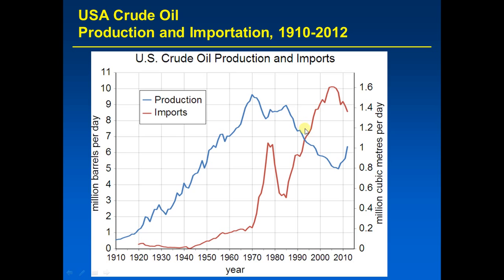As U.S. oil production started to decline in the 80s, imports went up. There's a dramatic rise in U.S. oil imports starting in the 70s. In 1970, the U.S. was only importing about 1.5 million barrels per day. By 1975–1976, that value had risen to about 6.5 million barrels per day. This was partly because of the sudden decline in U.S. oil production over several years — something unprecedented throughout the 20th century.